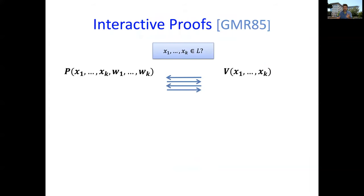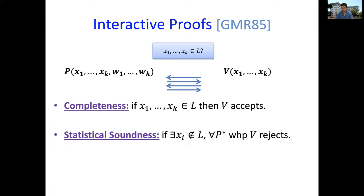To put things more formally, we're thinking about an interactive proof. We have a verifier who's given K inputs of some language L, and the prover is trying to convince the verifier that all of the inputs belong to L. The prover is given the K NP witnesses. We want completeness; if all statements are correct, the verifier should accept. If even one of the inputs' statements is incorrect, then no matter what the cheating prover does, even a computationally unbounded cheating prover, with high probability we want the verifier to reject.